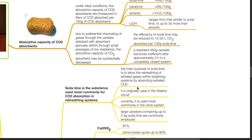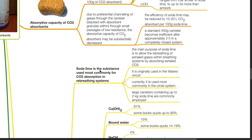Soda lime is the substance used most commonly for CO2 absorption in rebreathing systems. Its main purpose is to allow rebreathing of exhaled gases within breathing systems by absorbing exhaled carbon dioxide. It was originally used in the Waters circuit; currently it is used most commonly in the circle system. Large canisters containing up to 2kg of soda lime are commonly employed.